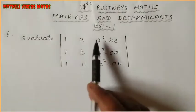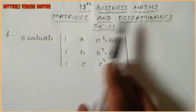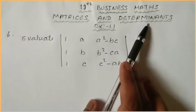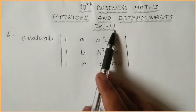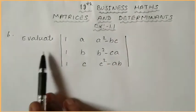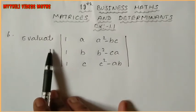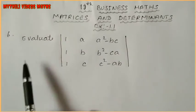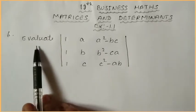Hi students, I am Maitli. This is 11th Business Maths. In this exercise 1.1, already 5 sums are completed, so everything is in the description box. Now we have to see the 6th sum.